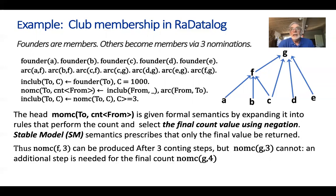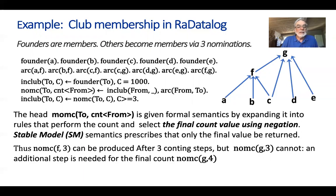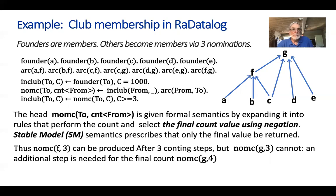The question is: who are the current members of the club? We start with the founding members, who are inducted with a high count of 1000 to distinguish them from the rest. Then, using the second rule, if somebody is already in the club and nominates someone, we count that nomination in the head of the second rule. When nominations exceed three, the third rule admits this person to the club.